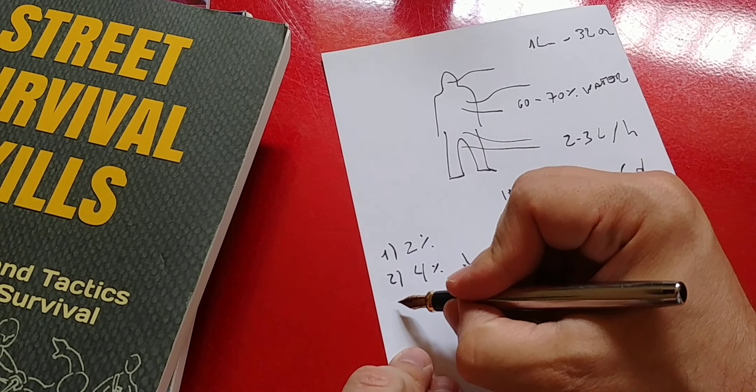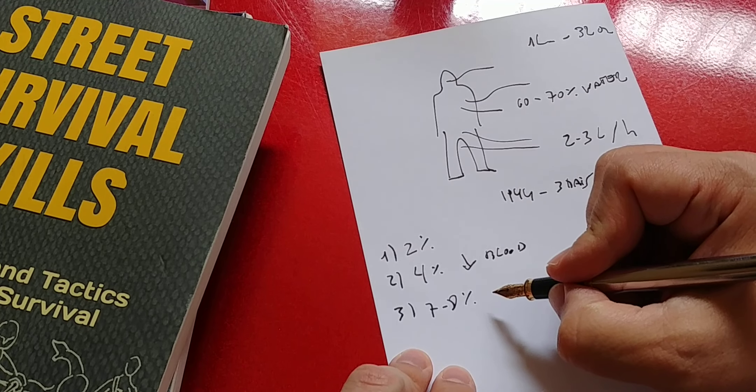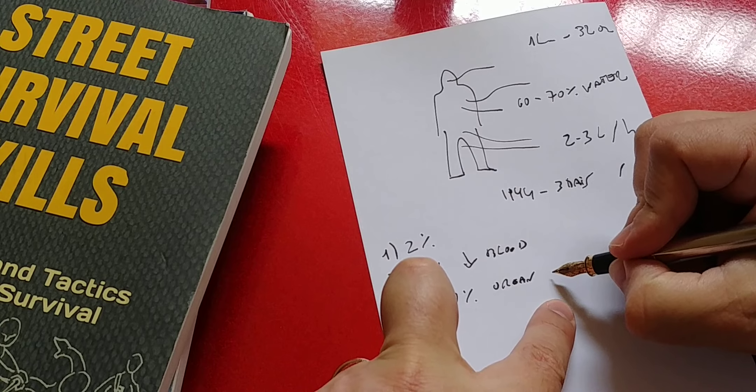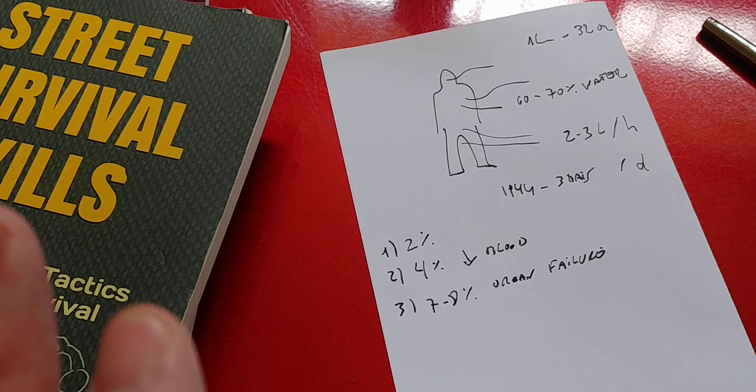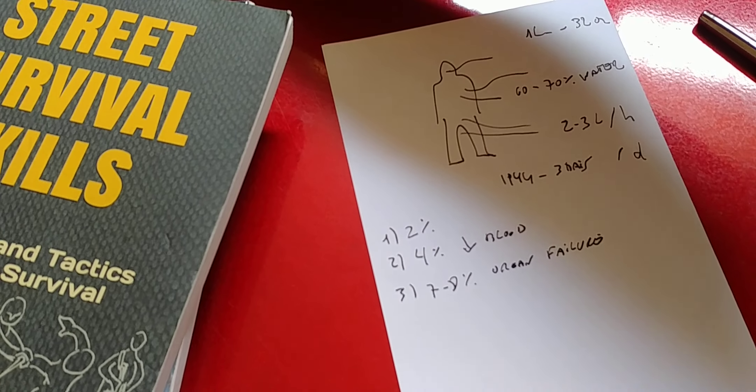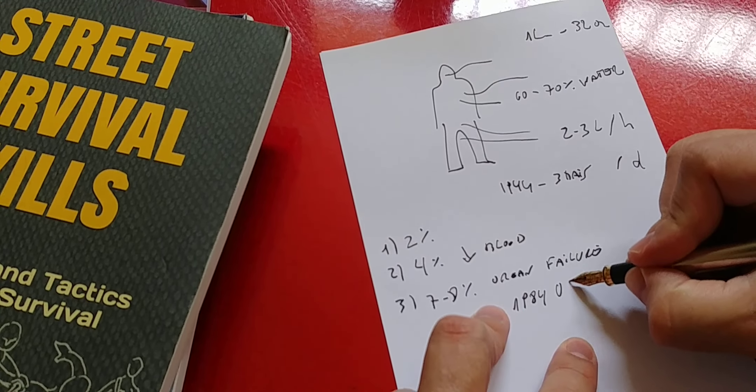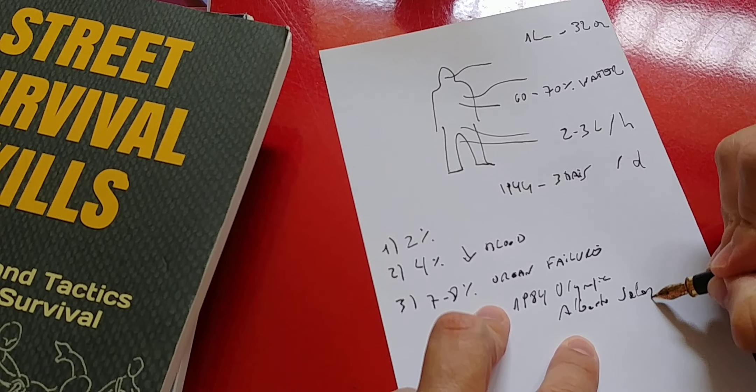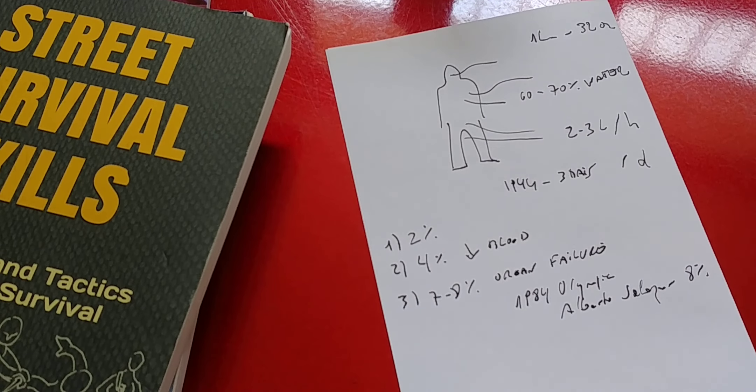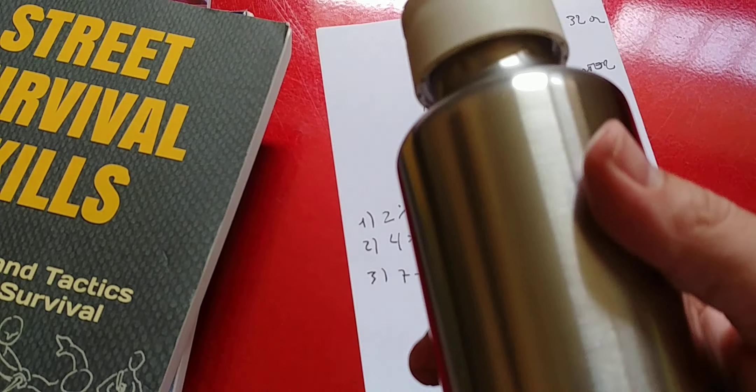Number three, third stage, you're looking here at about 7-8% loss of your body weight in water. Here, you're looking at organ failure. And here is where things start getting pretty dangerous for you. Now, this is not set in stone and I actually have it written here, 1984. During the 1984 Olympic marathon, Alberto Salazar lost 8% of his body mass in water during that marathon. Now, he didn't suffer the kind of organ failure you would traditionally end up suffering, mostly because he rehydrated quickly.